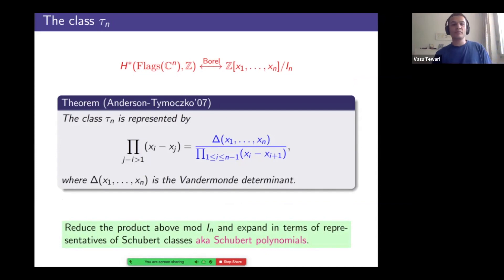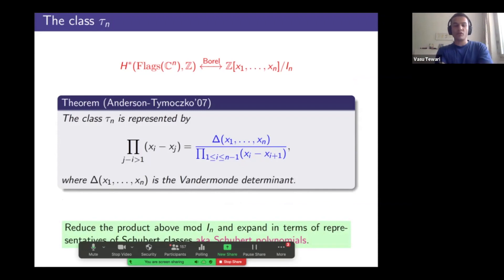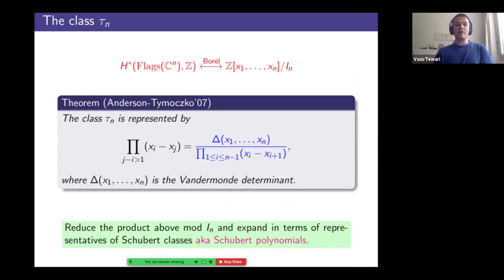Okay, so by Borel's isomorphism, I can cast all this computation in the coinvariant algebra in type A and then Anderson Timarchico show that the class of the Peterson slash permutahedral variety is represented by this van der Monde-like product. So I'm summing, oh, I'm taking the product of xi minus xj where j minus i differ by at least two. You can rewrite it using the van der Monde and then you see this thing that appeared earlier. This denominator contains the exact thing which appears in the denominator in the definition of divided symmetrization. Because that's perhaps the first hint that there could be some connection. And then the question becomes, I want to reduce this polynomial modulo invariant ideal and expand in terms of Schubert polynomials.